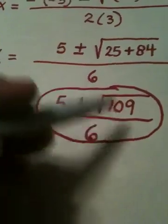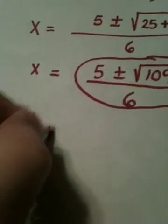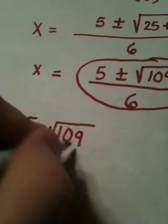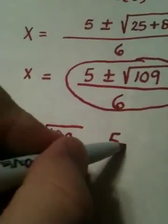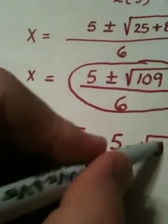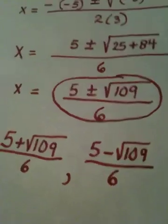And, there's basically two answers here. There's a 5 plus the square root of 109 over 6. And, there's a 5 minus the square root of 109 all over 6. And, we're done.